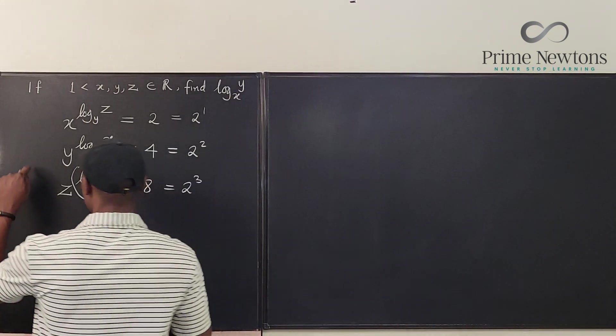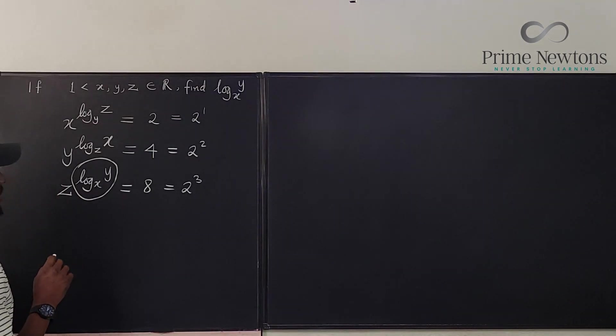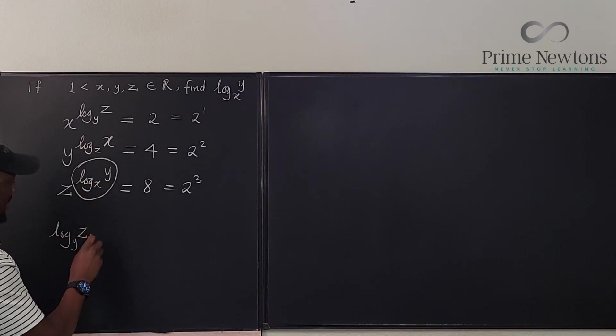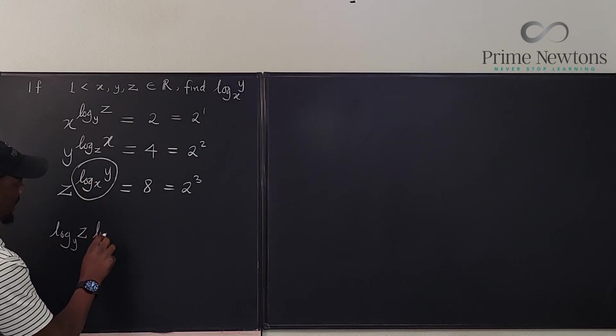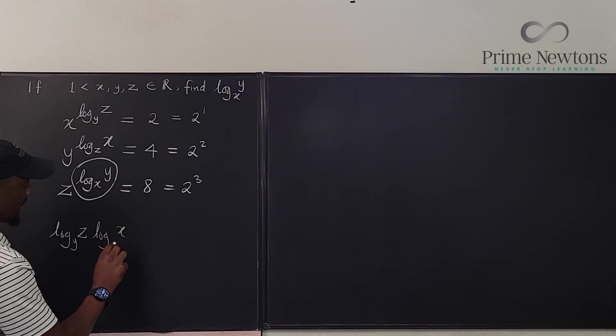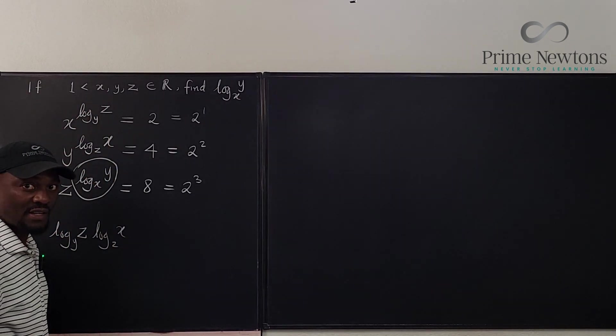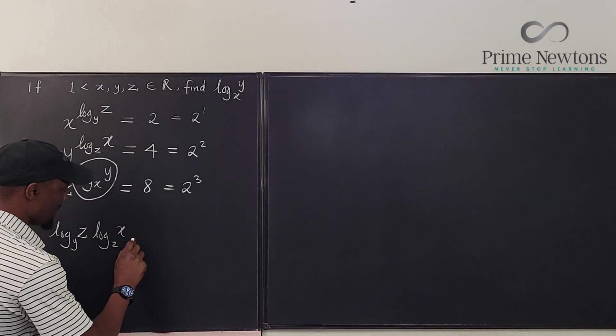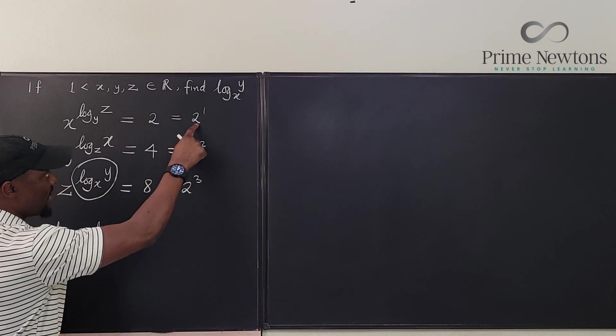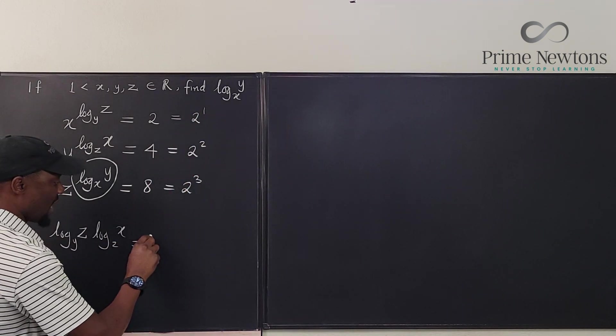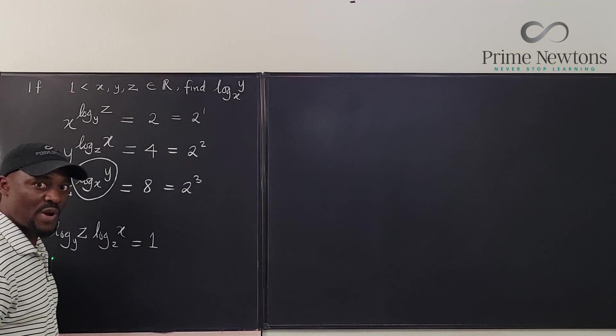So if we take the log to base 2 of this side, we're going to end up with log of z base y times log of x base 2. So this comes down and we take the log of this side. And that means we're going to be taking log to base 2 of 2. Well, our answer is going to be 1. We don't need to waste time on that.